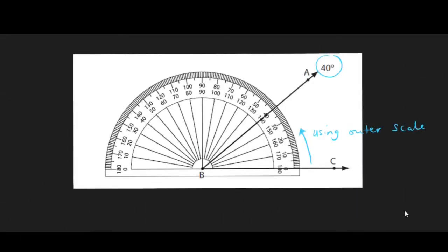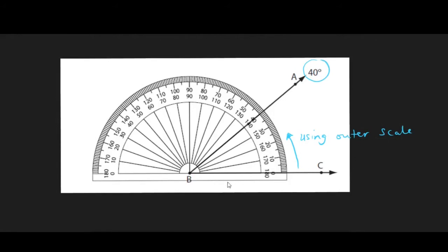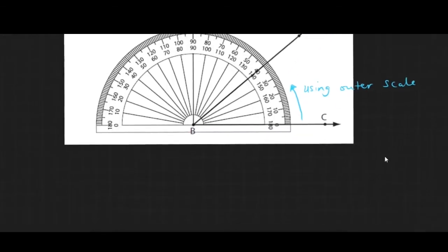We place the protractor onto this angle by merging the central point with the vertex of the angle and also the zero point on the outer scale with the line BC. Then we read from the outer scale in an anti-clockwise direction and align the second arm BA with a point on the outer scale. In this case, it measures exactly 40 degrees. So the angle between arms AB and BC is 40 degrees.